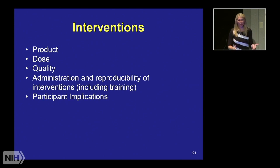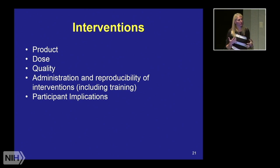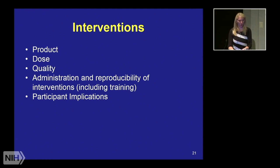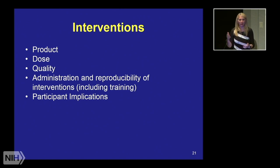There are a lot of elements in really detailing these pieces. When your intervention is something like cognitive behavioral therapy, it gets more complicated, because you have a provider delivering an intervention that's hopefully manualized and delivered the same way for all participants. How much variation do you allow in your study? Specifying that is really important so that somebody else can repeat the results if you find positive findings.